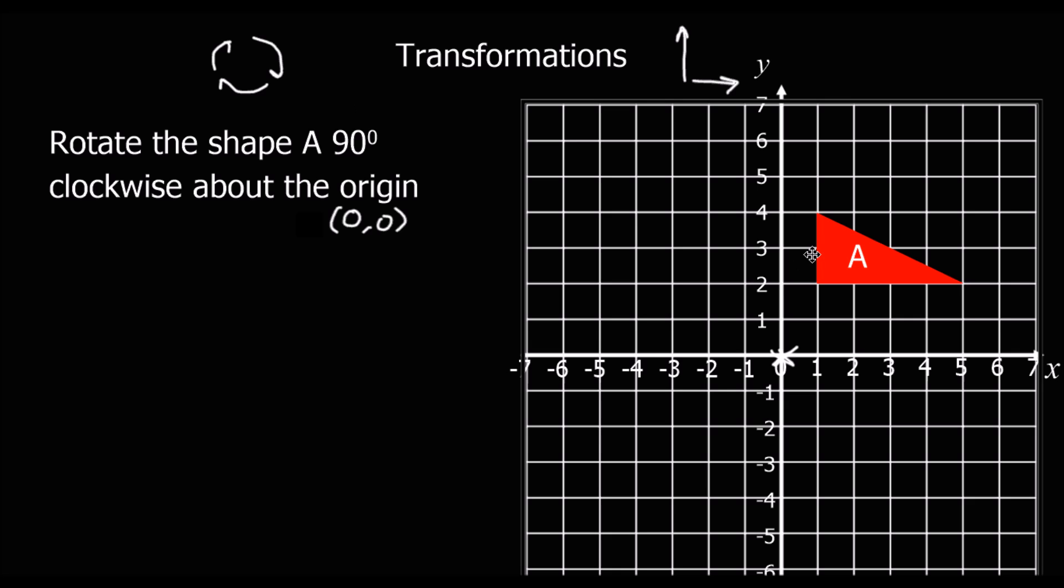So we're going to take this shape A and hopefully we're going to spin it 90 degrees. If we had some tracing paper, we could have drawn the little x here, the shape here, and even an arrow coming up here. We hold the tracing paper on the x, on the thing we're spinning it about.